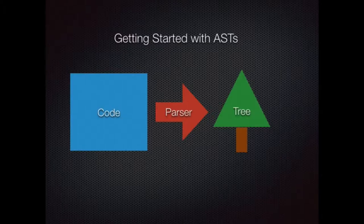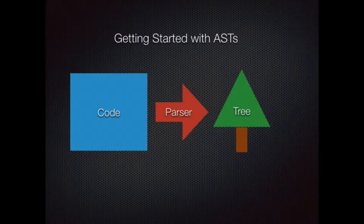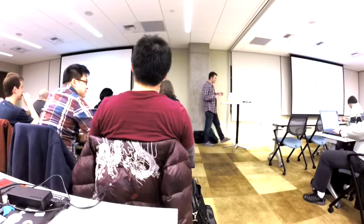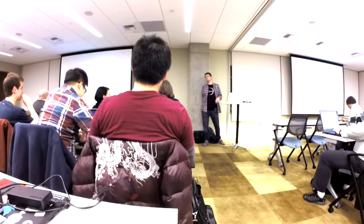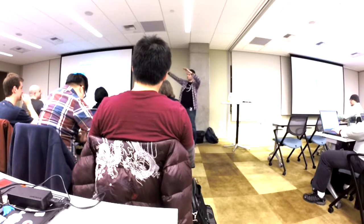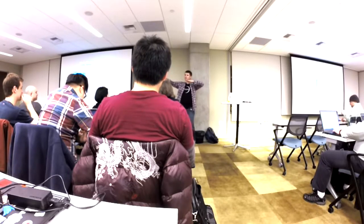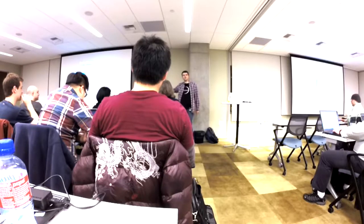Just a basic idea of how ASTs work — super simple. You've got your code, represented by a snippet. Then you have some kind of parser, and it converts it into a tree. That's pretty much it. I want to keep it simple. This is going to be like simple stuff, some squares. I think it'll be good.